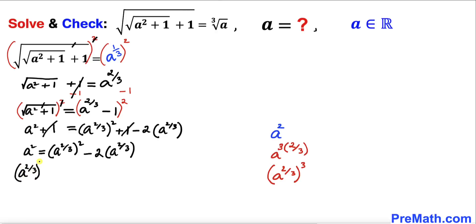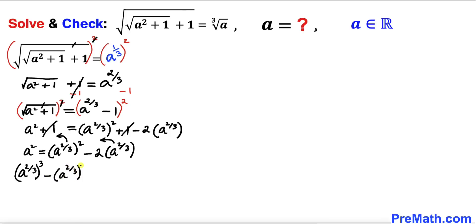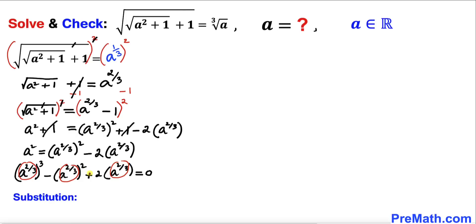Moving all terms to the left hand side, we get negative a to the power 2/3 squared times a, plus two times a to the power 2/3, equals zero. We can see that a to the power 2/3 is common among all terms. To simplify, we let u equal a to the power 2/3.